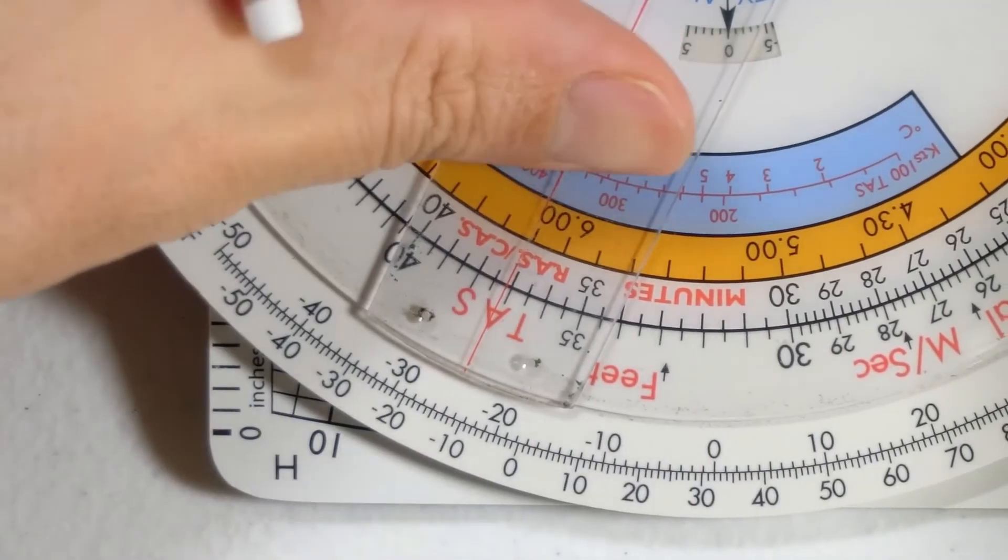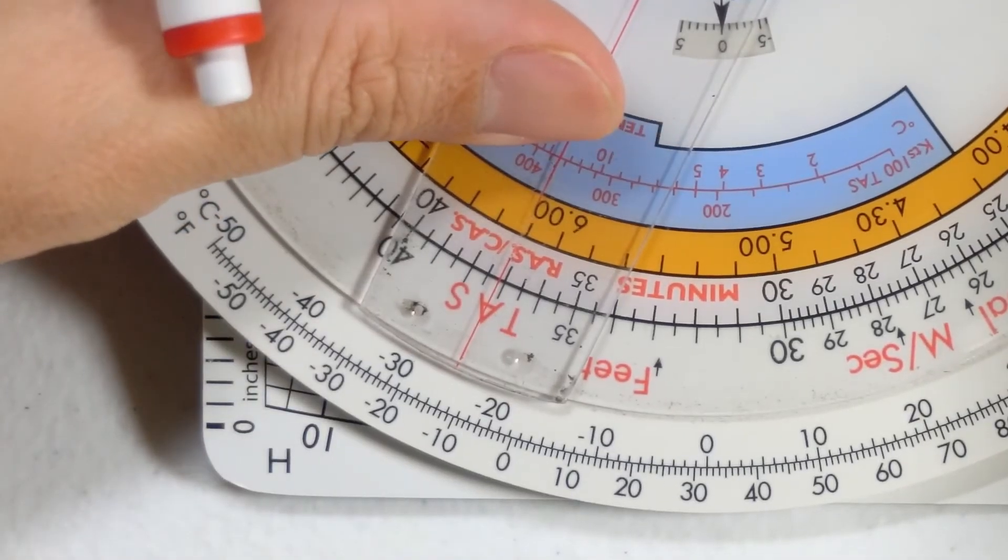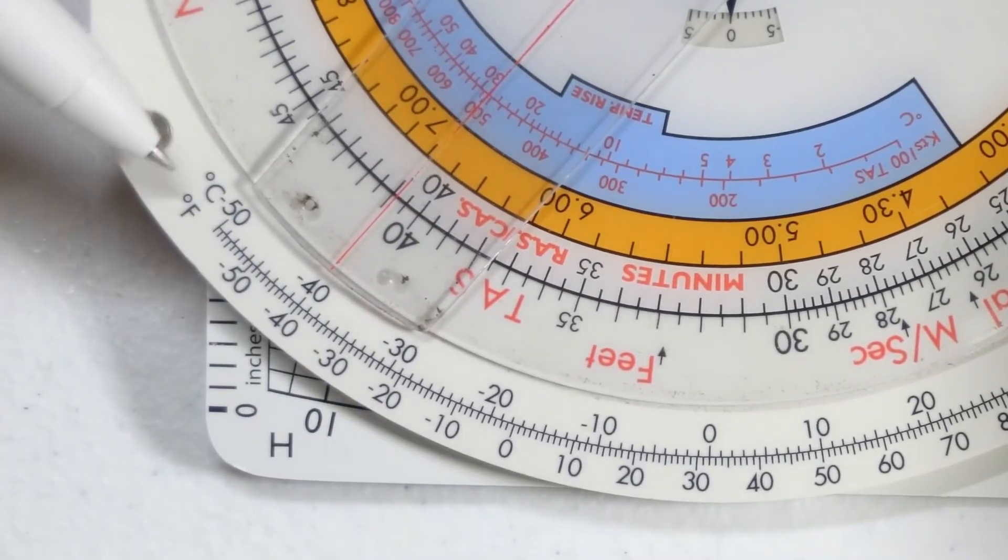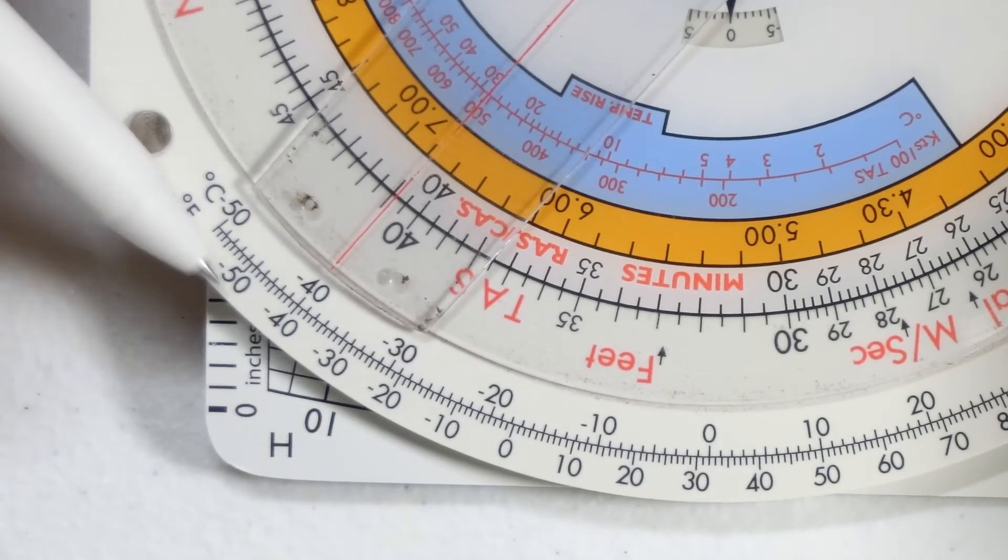Interesting points to note are that for the Celsius and Fahrenheit conversions, negative 40 degrees Celsius happens to coincide with negative 40 degrees Fahrenheit.